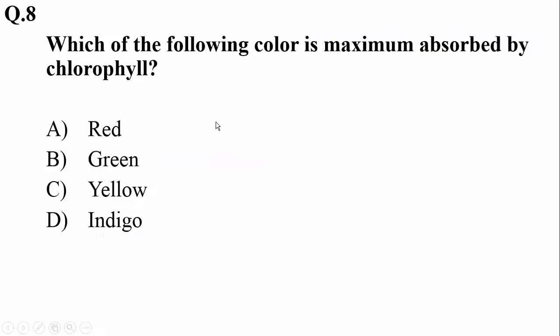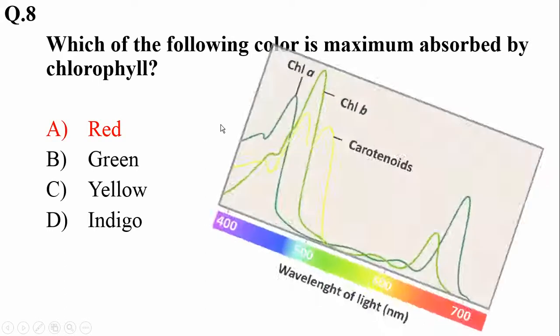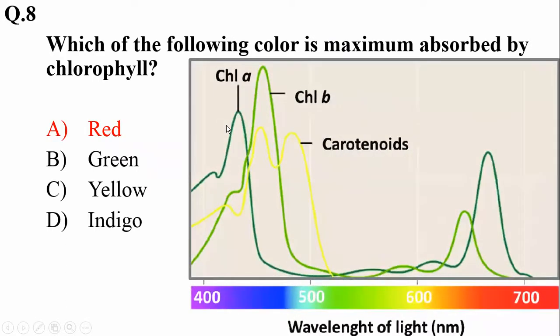Question number eight: which of the following colors is maximum absorbed by chlorophyll? It is red. As you can see, there are two absorption peaks formed — one in the blue range as well as one in the red range.